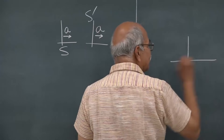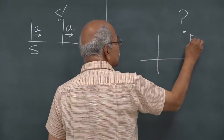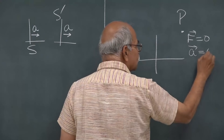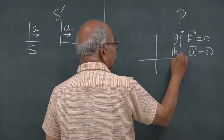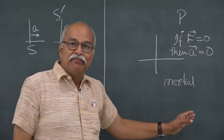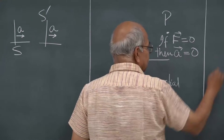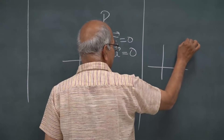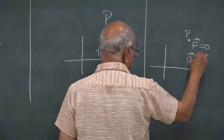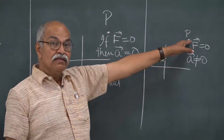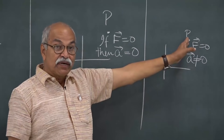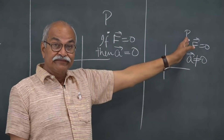If you have a frame with a particle inside it, the total force on the particle is zero, and from this frame you find that the particle has no acceleration — acceleration is also zero — then this frame is inertial. But if that does not happen: from this frame I am looking at a particle on which the total force is zero, but I find that it is accelerating — the particle is accelerating without any applied force — then this frame is non-inertial.